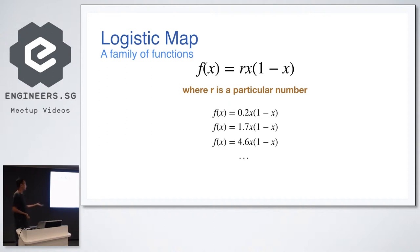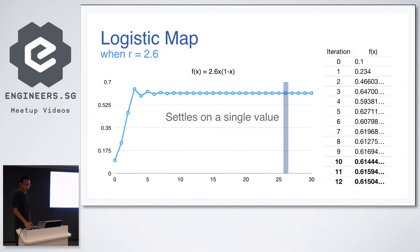Logistic map is a function that takes this form: r times x times 1 minus x. I think it's pretty easy to understand. And where r is a particular number. You can just add in any values to replace the r, and you get a bunch of functions. They are called logistic maps. Let's do some iterations on logistic maps.